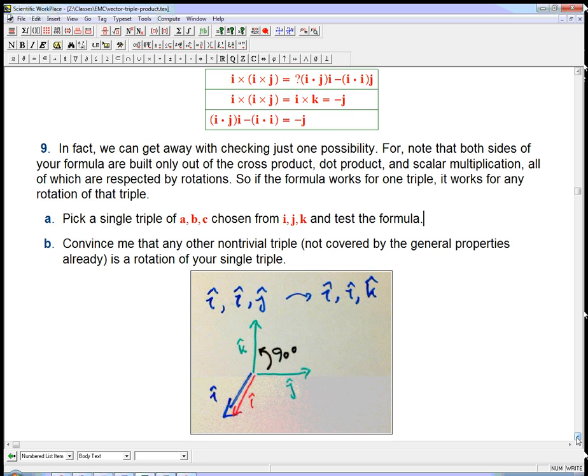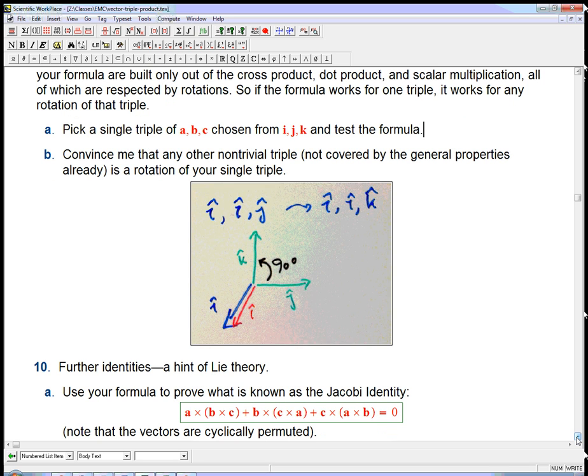So we could then just check one triple. Well, for example, we did it right here. We have i, i, and j, and we made sure that that worked. And I claim that that's really enough to make sure the formula must work for everything else. Why is that? Well, there's a lot of triples we know we don't have to check.